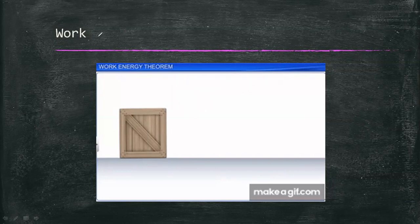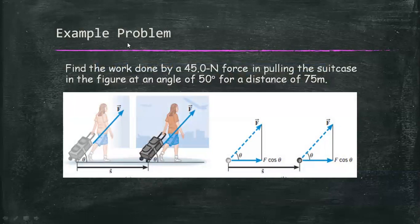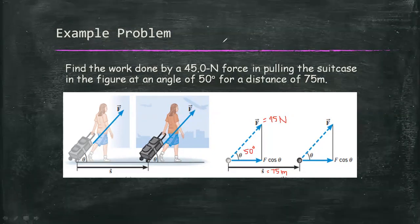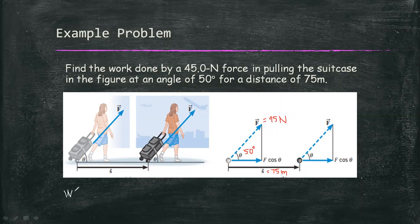Let's have an example problem. Find the work done by a 45.0-N force in pulling the suitcase in the picture at an angle of 50 degrees for a distance of 75 meters. We have this figure and the given values. We are looking for work, and the formula for work is force times displacement.